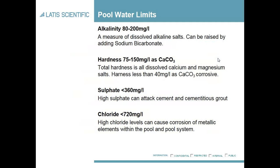So the chemistry of the pool — there are some main constituents that we look for. The first one is alkalinity. Alkalinity is a measure of the bicarbonate and carbonate hydroxide content. The higher the alkalinity, the more resistant the pH change will be. The range we look for is between 80 to 200 milligrams per litre. If it's below 80 you will often find you get pH bounce or rapid changes in pH.